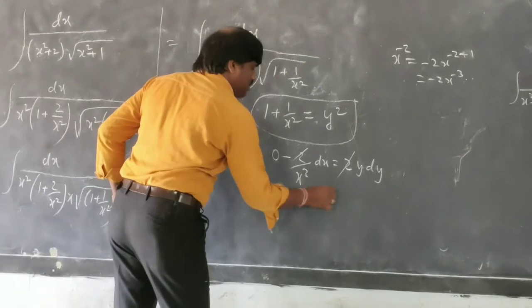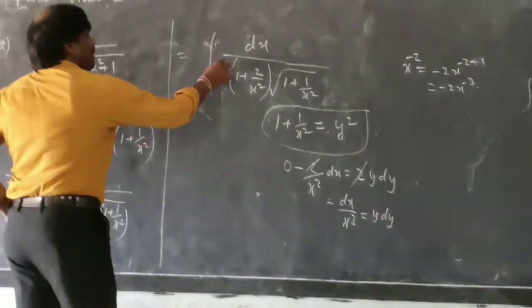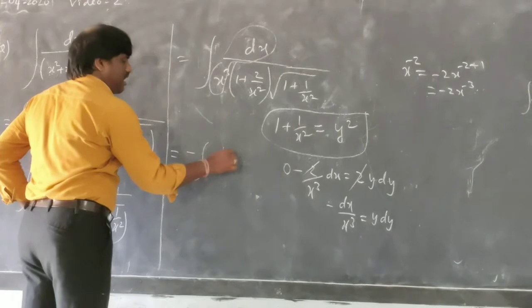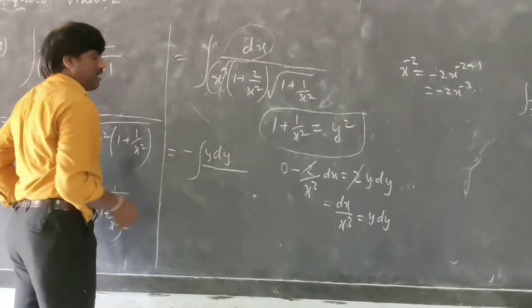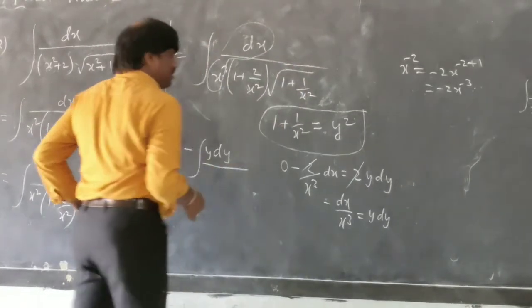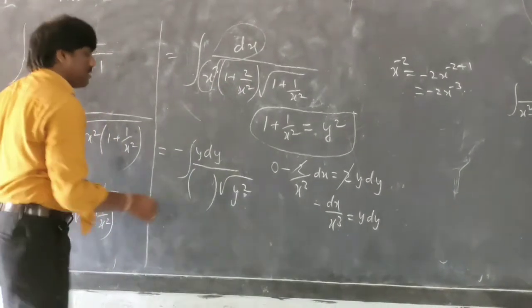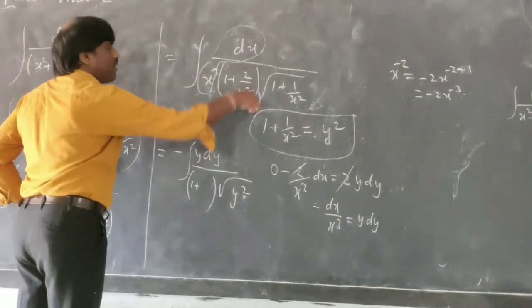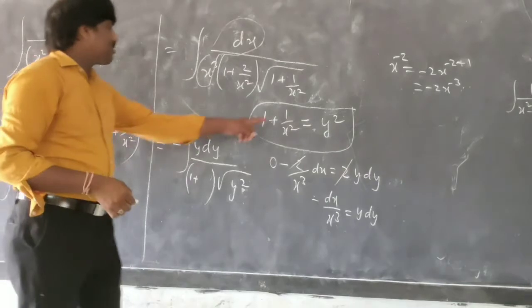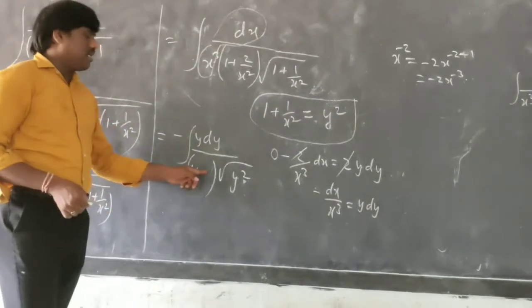The 2 gets cancelled. So −dx/x² = y dy. Now under the root we have 1 + 1/x², which is y² — so the square root cancels with y. And for the term 1 + 2/x²: since 1/x² = y² − 1, we can write 2/x² = 2(y² − 1) = 2y² − 2. Hope you understand.